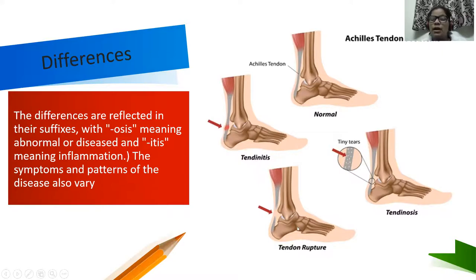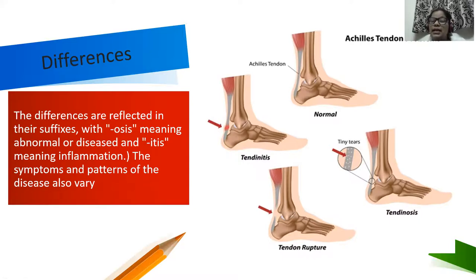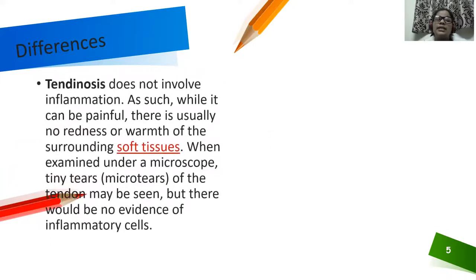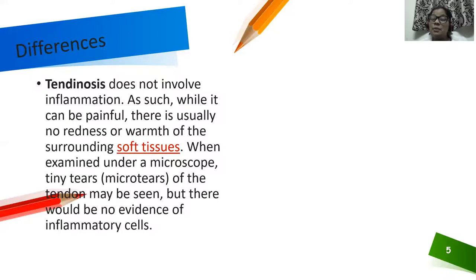In tendinitis there is inflammation or direct trauma, and you can see tendon rupture. In tendinosis, there are tiny tears — as seen in the Achilles tendon — which cause chronic degeneration. Tendinosis does not involve inflammation; there is usually no redness or warmth in the surrounding soft tissues. Under a microscope, micro-tears may be seen but there would be no evidence of inflammatory cells — a very important difference.